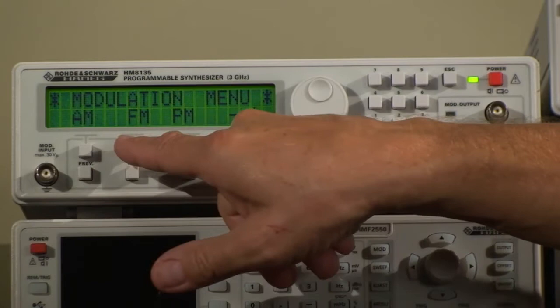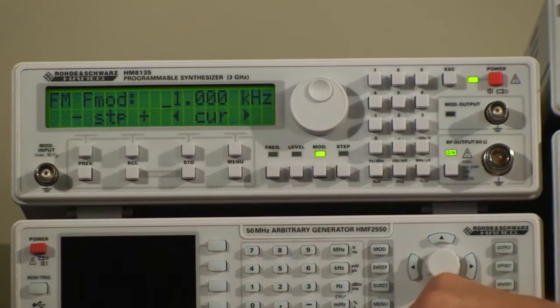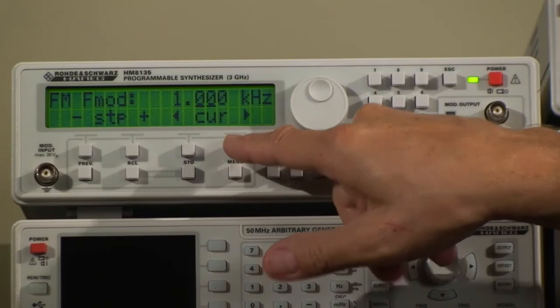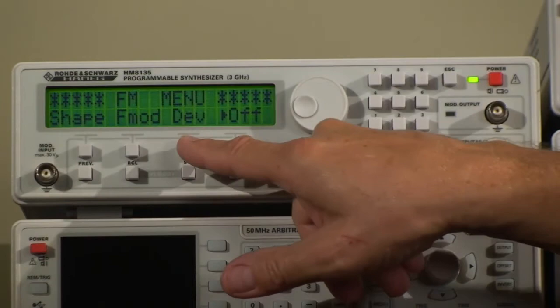So if we go to modulation, I'll just show you that real quick. FM—the frequency you want to modulate with, one kilohertz, very typical. You can change it here in increments, depending on where the cursor is positioned.